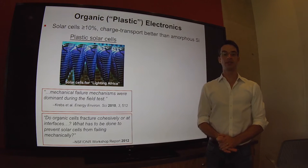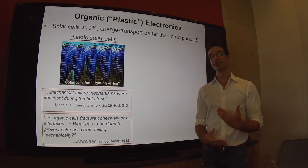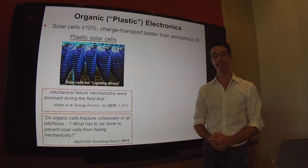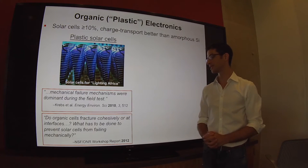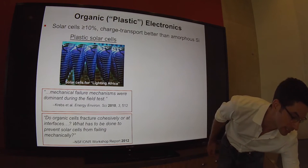Moreover, a few years ago at the combined workshop of the National Science Foundation and the Office of Navy Research, one of the unanswered questions was: do organic solar cells fracture cohesively or at interfaces, and what has been done to prevent these devices from failing mechanically?